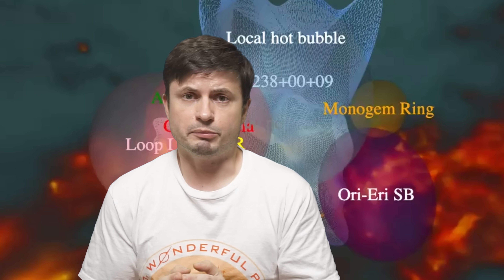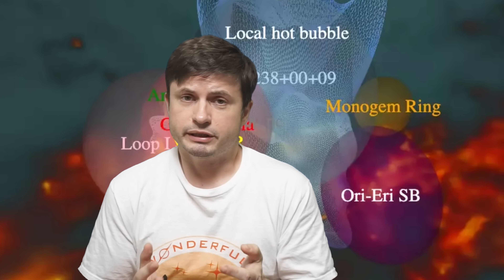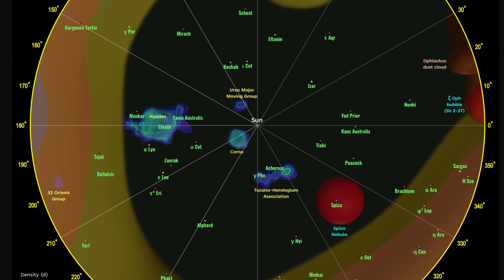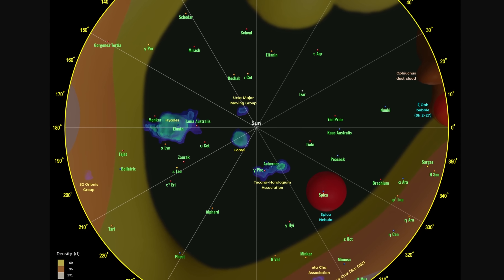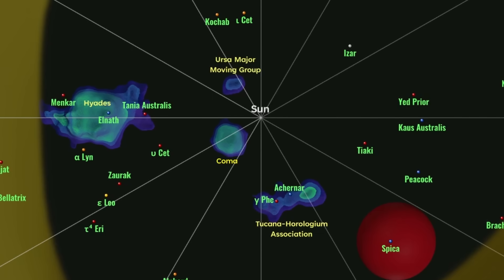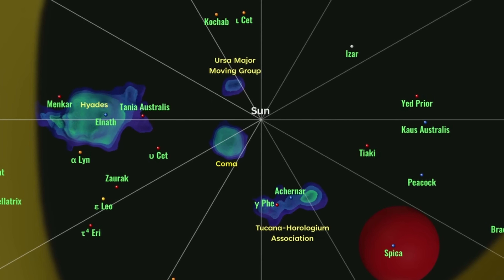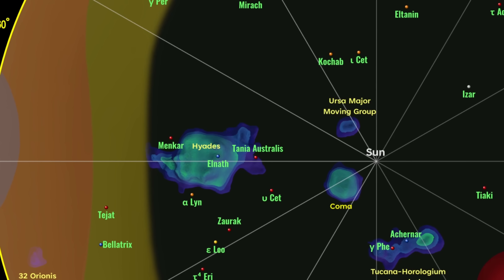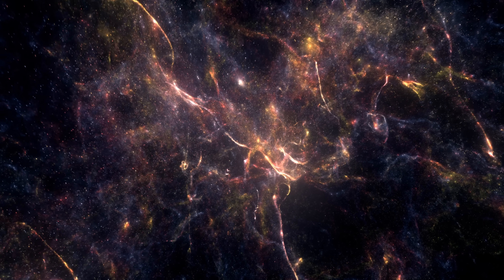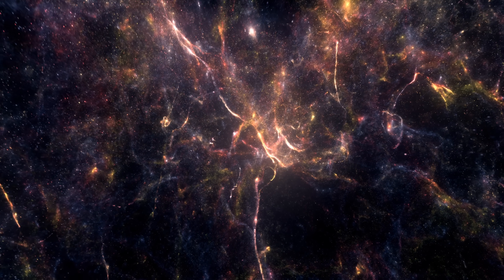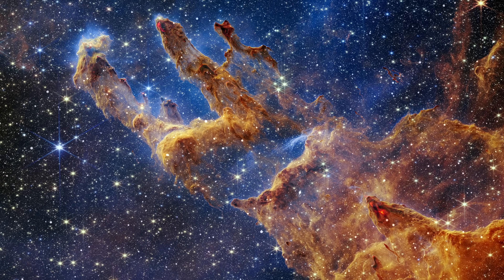Let's start with the basics of what exactly this bubble is and what we know about it so far. Using a map by Kevin Jardine, here in the middle we have our sun, but if you travel in any direction for hundreds of light years you find yourself in a somewhat unusual environment containing a much lower density of matter compared to the rest of the Milky Way. The density of hydrogen is about 0.05 atoms per centimeter cubed, which is about 10 times less than the rest of the galaxy — essentially a low-density bubble formed by something extreme millions of years ago.